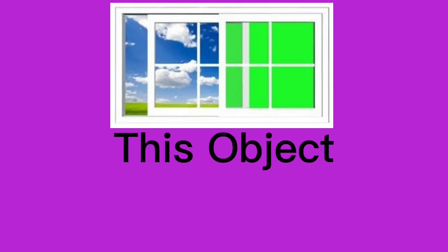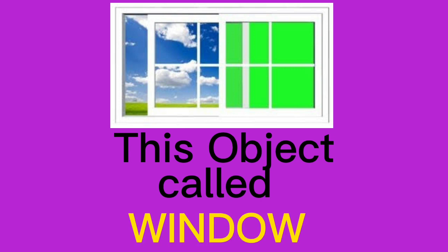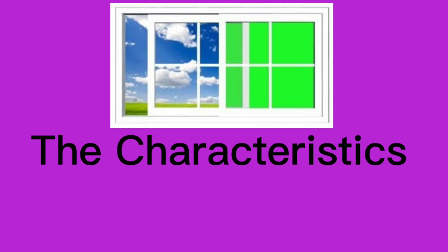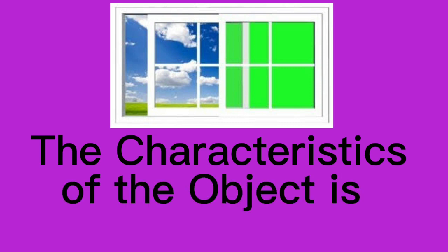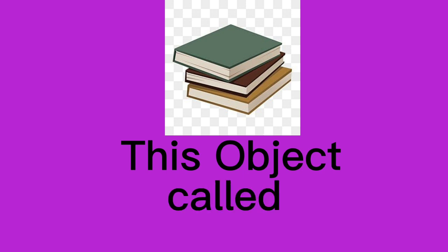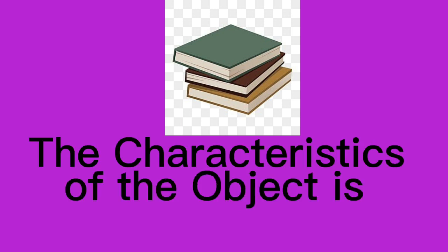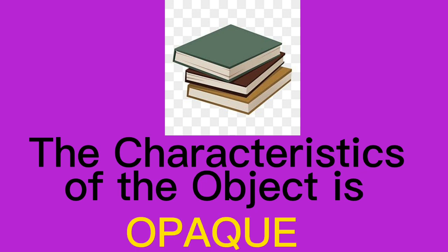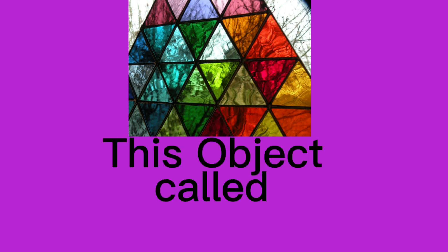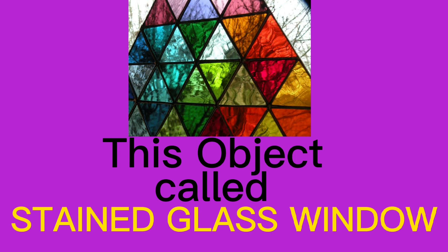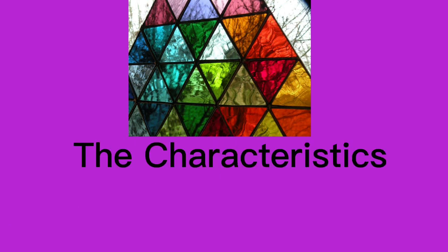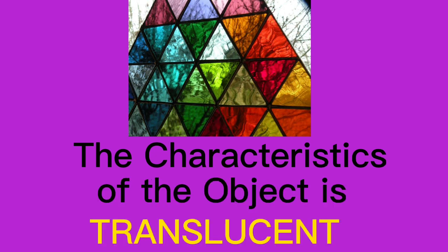This object is called a window. The characteristics of the object is transparent. The characteristics of the object is opaque. This object is called a stained glass window. The characteristics of the object is translucent.